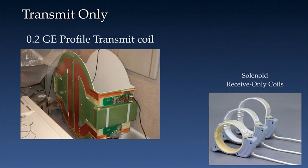Here's an example of a transmit-only coil from a 0.2 Tesla GE profile system. The coil has been removed from the magnet and is sitting on its side. Also shown are the receive-only coils that would be used with this type of system.